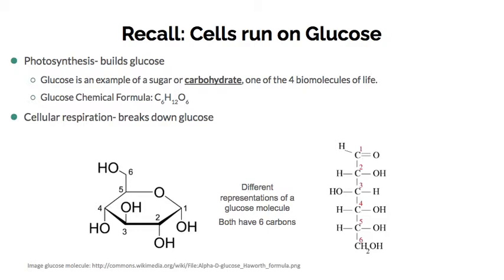First, for our review: cells run on glucose. Photosynthesis builds glucose, cellular respiration breaks it down. In our biomolecules unit, we have seen this ring structure for glucose. Remember, carbohydrates typically have this kind of ring structure — monosaccharides — and then your polysaccharides were things like starches with a lot of these little rings brought together. Glucose is an example of a sugar or carbohydrate, and the chemical formula is here, and we should have that memorized by now.